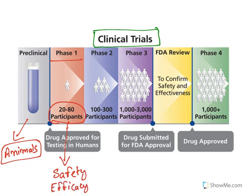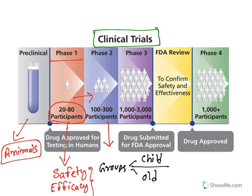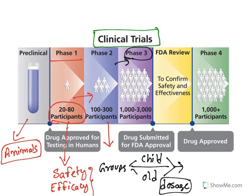Once safety and efficacy are established in phase 1, it moves to phase 2, carried out with 100 to 300 participants. In this phase, people are divided into groups — such as children and older adults — and the drug is tested to determine whether it acts similarly across groups. This is also carried out to determine the doses of the drug or vaccine. After phase 2, the drug enters phase 3, which is carried out on a large population ranging in the thousands, where all groups are tested for efficacy. Once safety and efficacy are proven, it gets approval to enter the market.